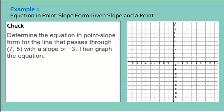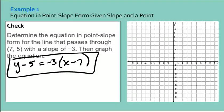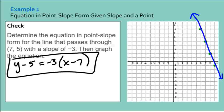Next, write the equation in point-slope form for the line that passes through 7, 5 with a slope of negative 3, then graph it. So Y minus 5 equals negative 3 times X minus 7. This is our equation; we can't simplify it further. Plotting point 7, 5, then using slope negative 3 — going down 3 to the right 1, or up 3 to the left 1 — we draw the line through the points.